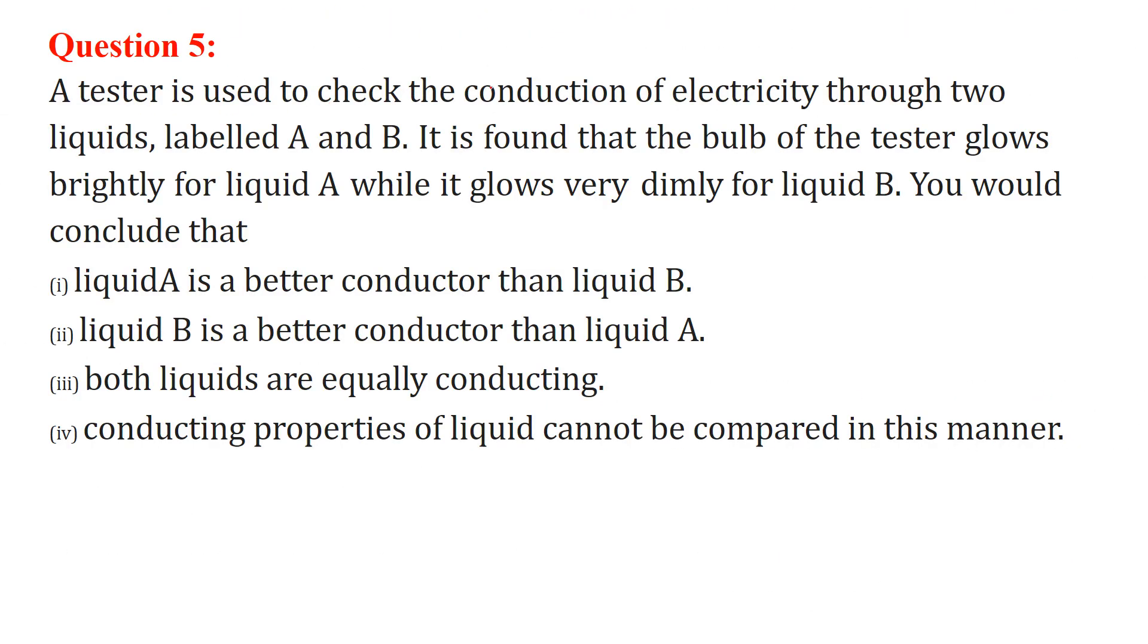A tester is used to check the conduction of electricity through two liquids labeled A and B. It is found that the bulb of the tester glows brightly for liquid A while it glows very dimly for liquid B. You would conclude that liquid A is a better conductor than liquid B.